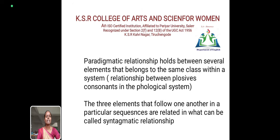The paradigmatic relationship holds between several elements that belong to the same class within the system — for example, the relationship between plosives, consonants, and the phonological system. The three elements that follow one another in a particular sequence are related in what can be called a syntagmatic relationship.